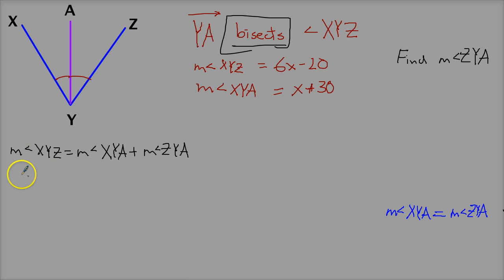The measurement of XYZ is 6X minus 20. So right below this, I'll put 6X minus 20. The measurement of XYA is X plus 30. But here's the problem. I don't know what this is yet, but I can find it because of the information they give me here. XYA is X plus 30, and if they're the same, then this one must be X plus 30 as well.